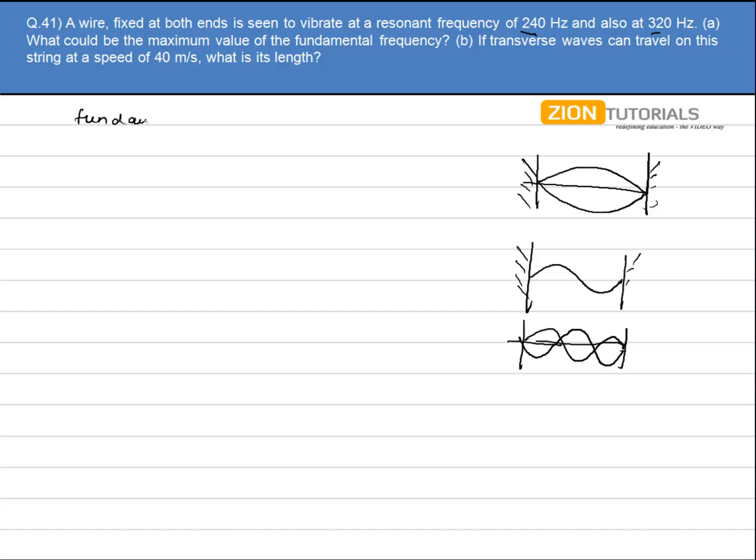In the second part, I have to calculate the length when the transverse wave can travel at a speed of 40 meters per second. We know that for fundamental frequency, lambda by 2 is equal to L.